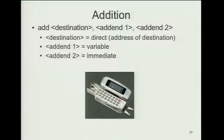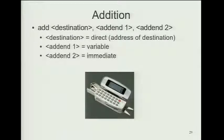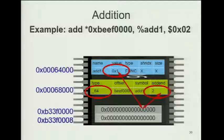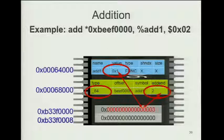For addition, the destination is directly specified. The first operand is a symbol — a variable — and the symbol's value is the one that's copied. The second operand is immediately specified — the value is directly in the instruction. This uses a relocation entry of type 64, meaning we take the addend plus the value of the symbol itself, and write the result into the correct location.